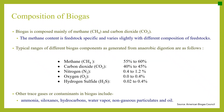Let's look into the composition of biogas. Biogas is composed mainly of methane and carbon dioxide. The methane content is feedstock specific and varies slightly with different compositions of feedstocks. Typical ranges from anaerobic digestion are: methane 55–60%, carbon dioxide 40–45%, nitrogen 0.4–1.2%, oxygen 0–0.4%, and hydrogen sulfide 0.02–0.4%.